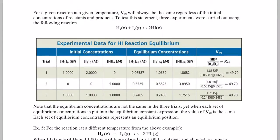Welcome back. We're going to continue our discussion of equilibrium. Last time we learned how to write an equilibrium expression, and we said we can calculate something called the equilibrium constant. For a given reaction at a given temperature, the constant will always be the same regardless of the initial concentrations of reactants or products. That's why we call it a constant.